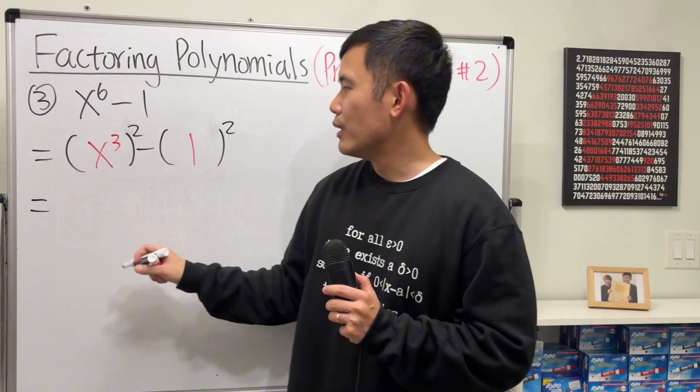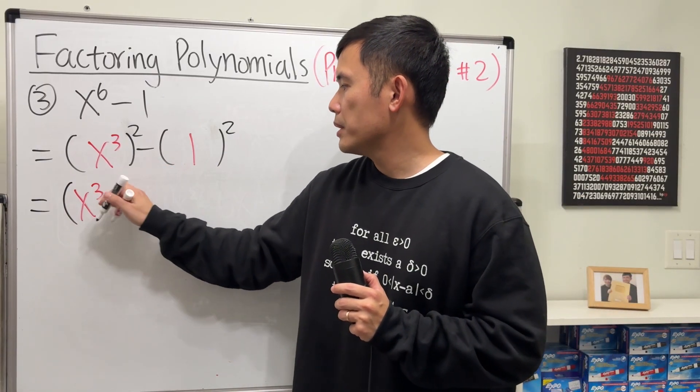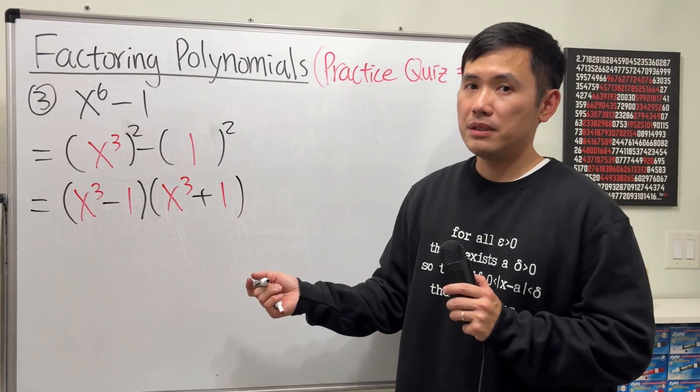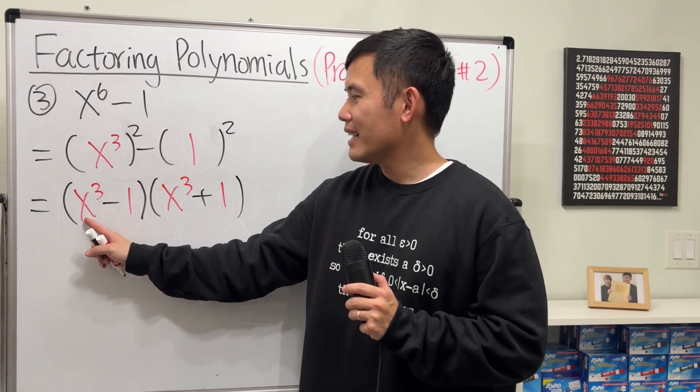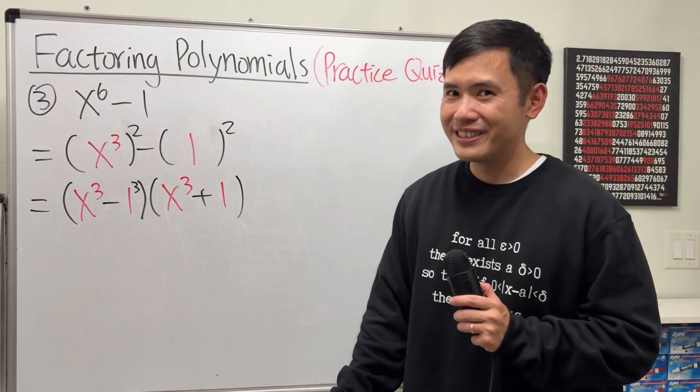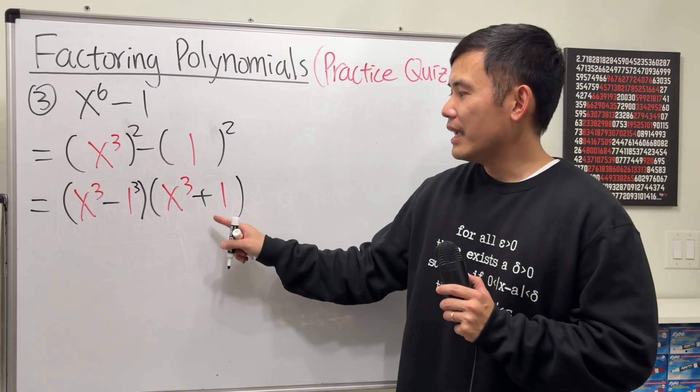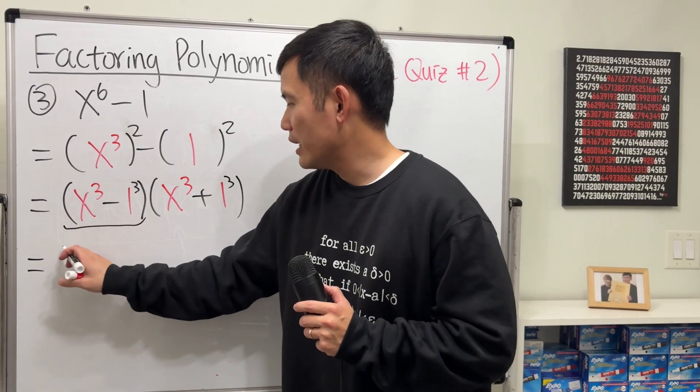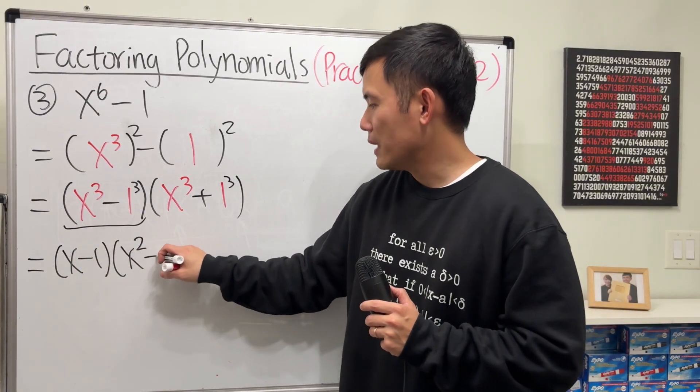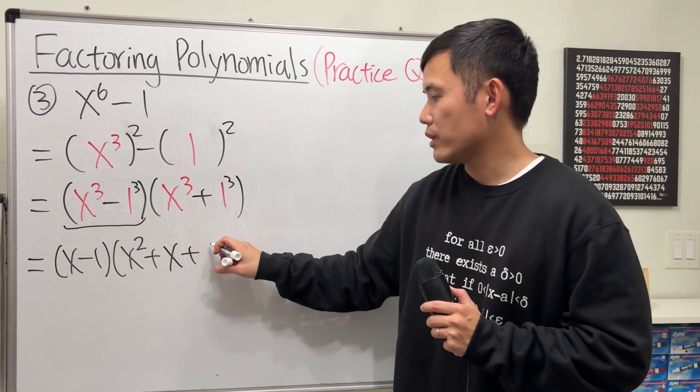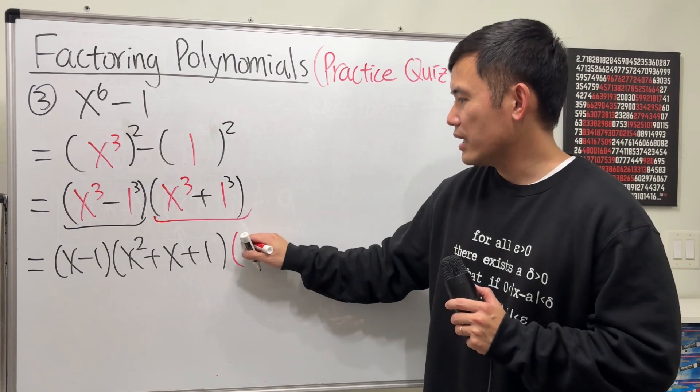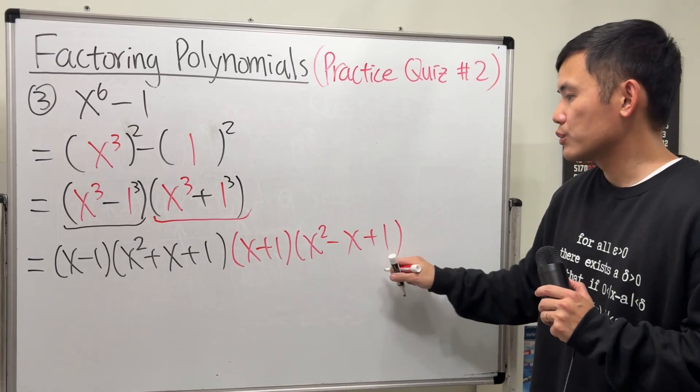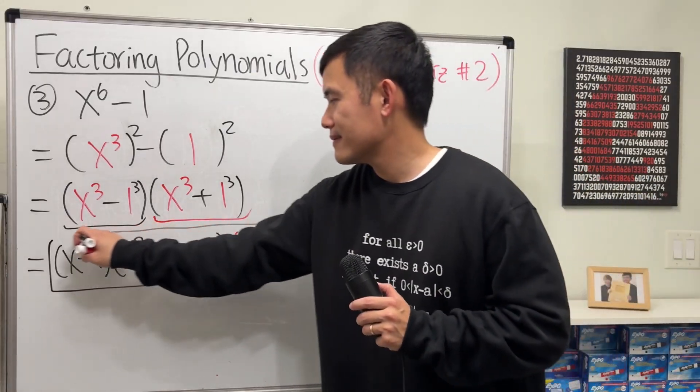Now I'm just going to write down the result of the difference of two squares. We will get (x³ - 1)(x³ + 1). a - b times a + b. Now notice, what's this? x³ - 1³. So this is the same as the difference of two cubes. This is the sum of two cubes. So the first one is totally factorable. I'm going to do this right here. We get (x - 1)(x² + x·1 + 1²), which is just (x - 1)(x² + x + 1). And then for this, we get (x + 1)(x² - x·1 + 1²), which is (x + 1)(x² - x + 1). Just like that. That's the answer.